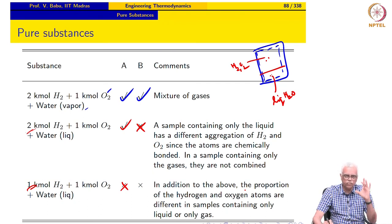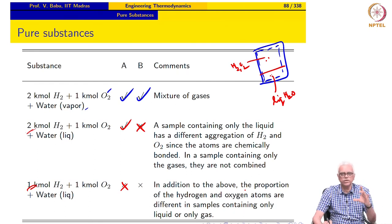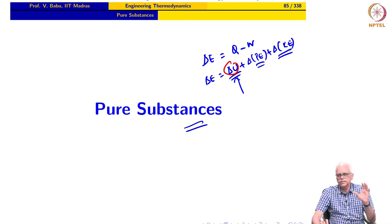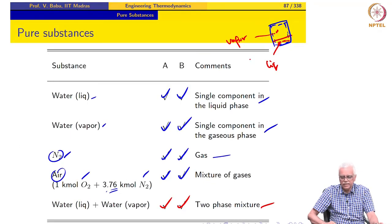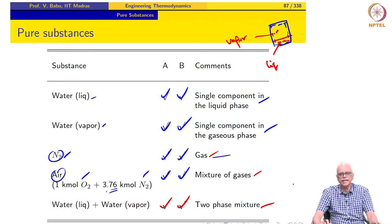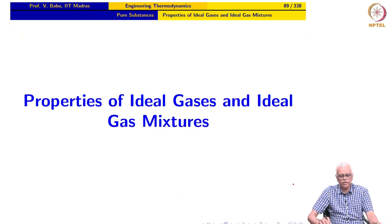In order to calculate the change in internal energy of the system, the system must be comprised of a pure substance — that is the framework we require. We can already calculate changes in PE and KE easily. To calculate delta U, we now require that the system be comprised of a pure substance. This is a very important requirement. Once we have this, we can evaluate changes in properties for each type of pure substance: how to calculate change in internal energy of a single-component gas, a mixture of gases, or a two-phase mixture. We will take these up in the next lecture, starting with ideal gases and ideal gas mixtures.